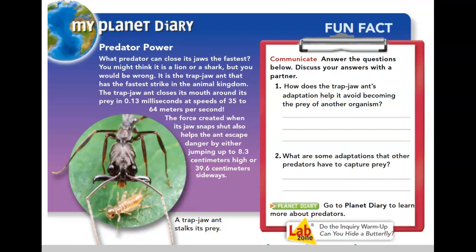Lesson 3: Interactions Among Living Things. After this lesson, we will be able to explain how adaptations help an organism survive, describe competition and predation, and identify the three types of symbiosis.